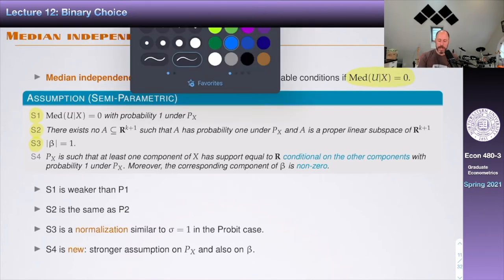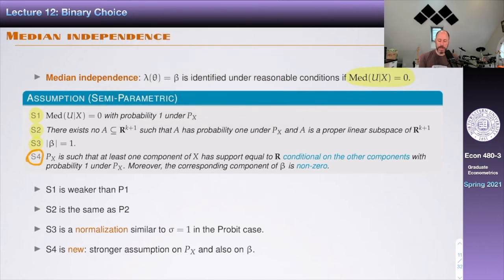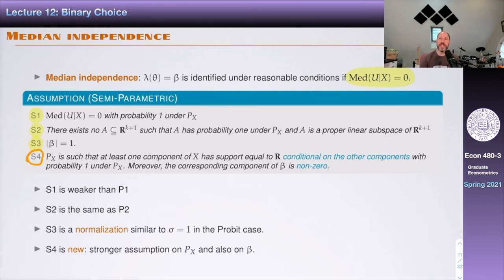S4 puts a lot of requirements on the observed X — you need one regressor that is continuous with full real-line support conditional on all the other covariates. Suppose the other X's are discrete, like gender or age — conditional on all those things, you need this special regressor to move around freely. This is going to play a key role for identification.